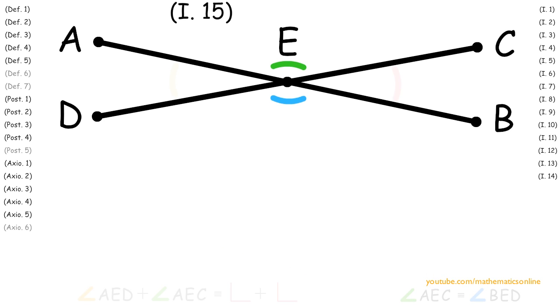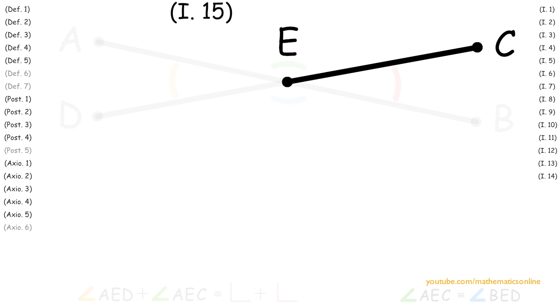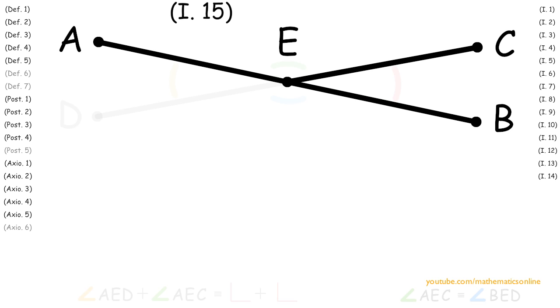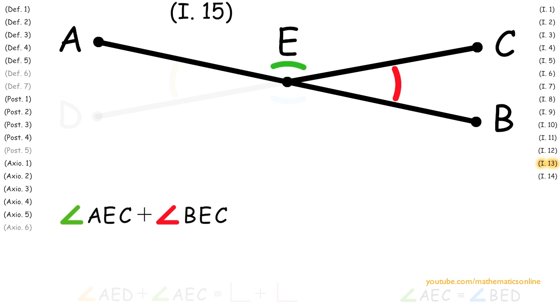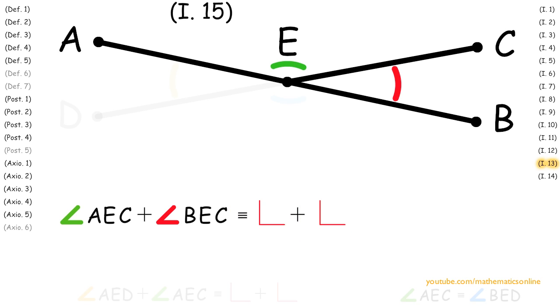Next, looking at the straight line CE and the straight line AB, we can see that by Proposition 13, the adjacent angles AEC plus BEC are congruent to the sum of two right angles.